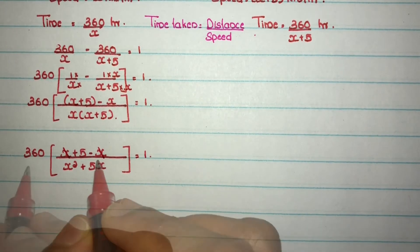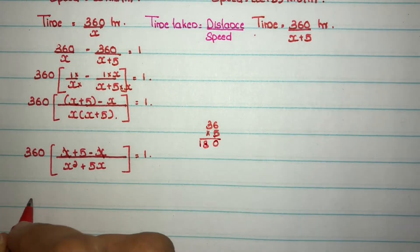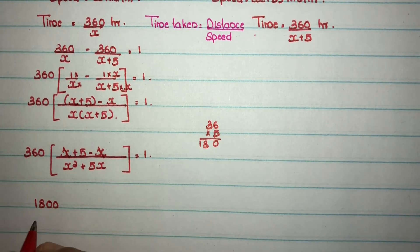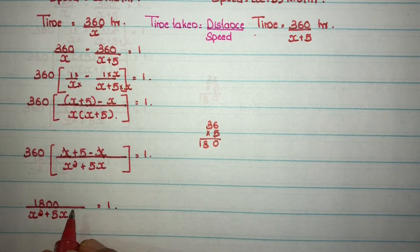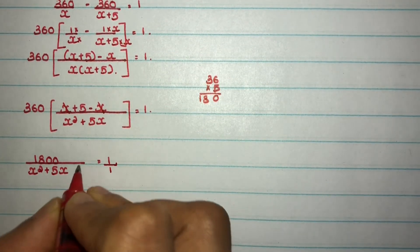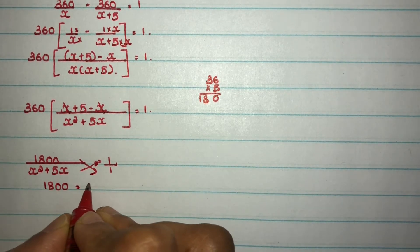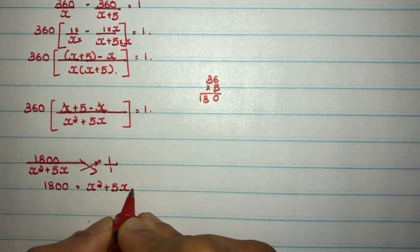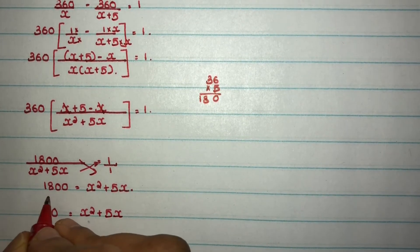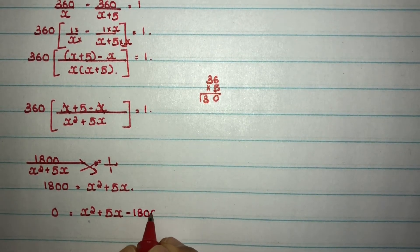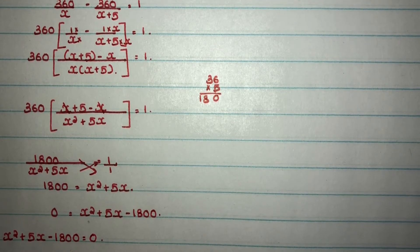Now cross multiplying — since 1 equals 1 over 1 — we get 1800 equals x squared plus 5x. Rearranging: x squared plus 5x minus 1800 equals 0. This is our quadratic equation.